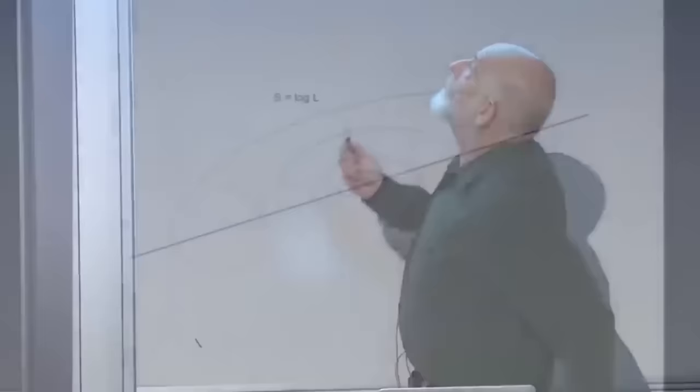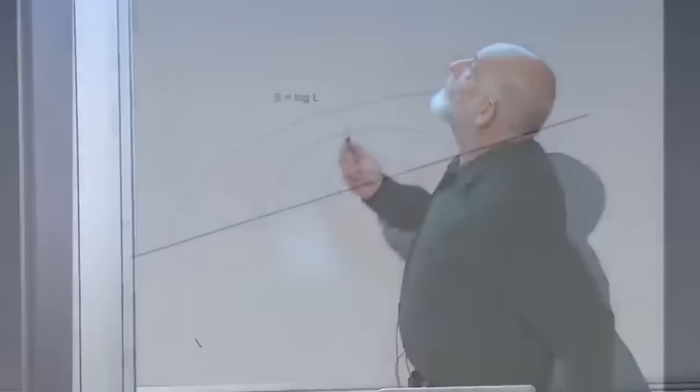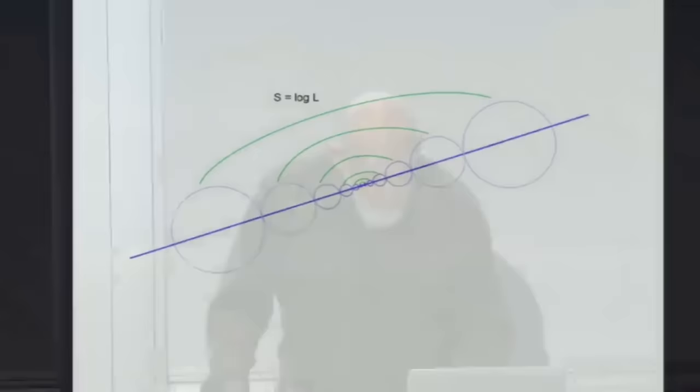Here's another example: if the quantum field theory is one-dimensional, the entanglement has the same character of entangled pairs, but the total number, instead of being proportional to some area, is proportional to the log of the total size of the system. Mostly I just wanted to say that such concepts exist—entanglement tells you something about how the quantum state is constructed, how it's correlated, and how it fits together.